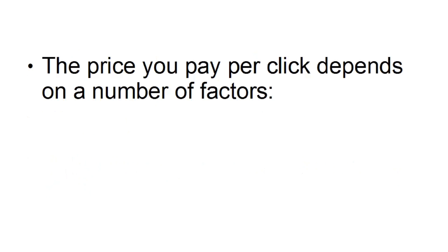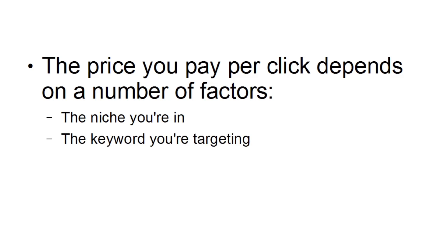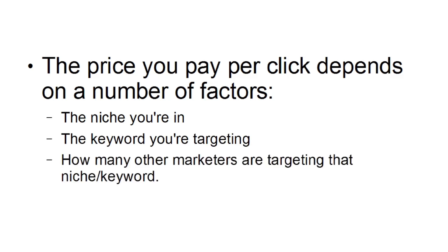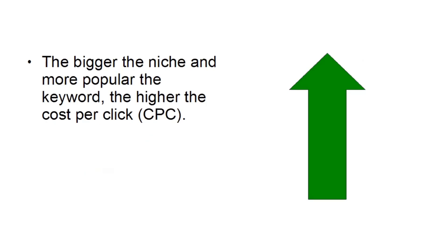The price that you're going to pay for each click depends on a number of different factors. It depends on the niche that you're in, the keyword that you're targeting, and how many other marketers are targeting that niche or keyword. The bigger the niche and the more popular the keyword, then the higher the cost per click, otherwise known as CPC.